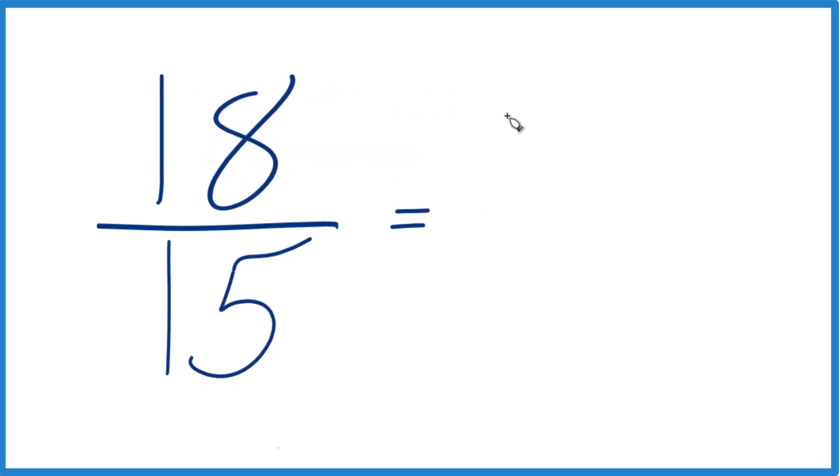18 divided by 3, that's 6. 15 divided by 3, that's 5. So we can simplify 18 fifteenths down to 6 fifths, and we can't simplify this any further.